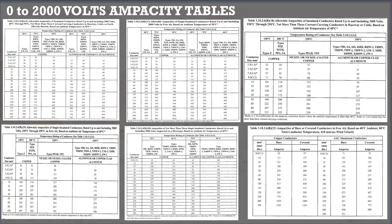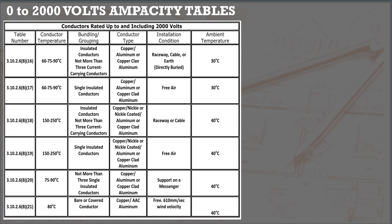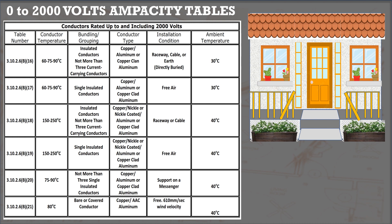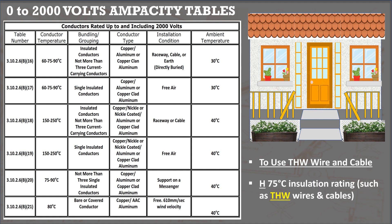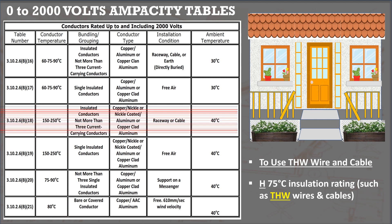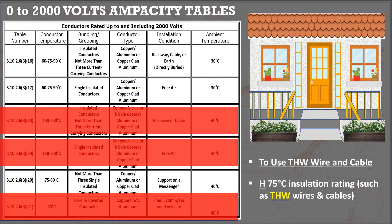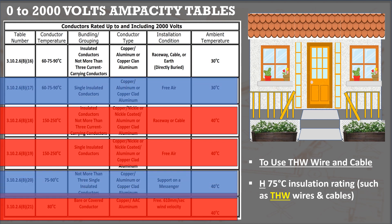How will we know which of the six tables to use for a particular project? Let's say we have a dwelling unit project using THW conductors with a temperature rating of 75 degrees Celsius. We can eliminate tables that do not have 75 degrees Celsius, leaving three tables. Since this is a dwelling unit installed via raceways, the other two tables are not applicable. Therefore, Table 3.10.2.6B16 will be used.